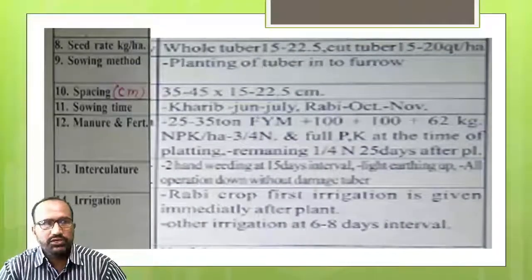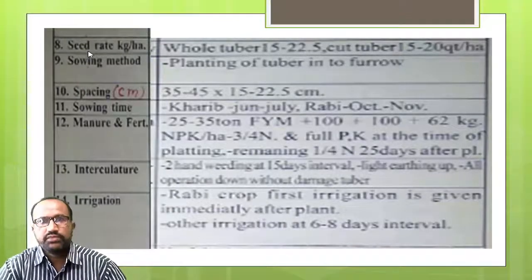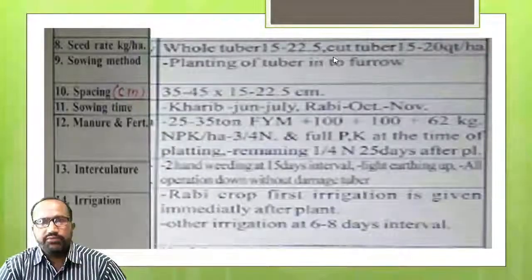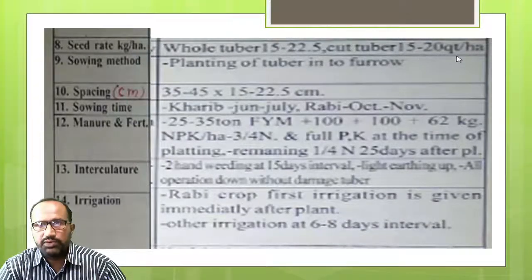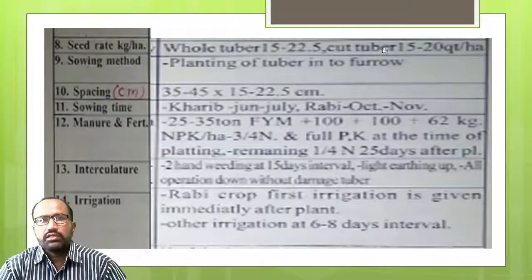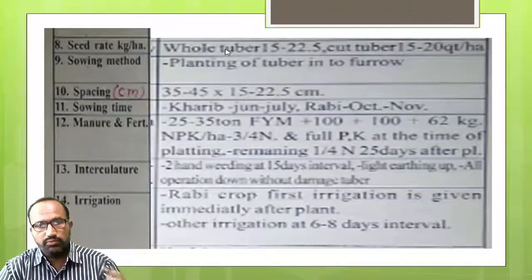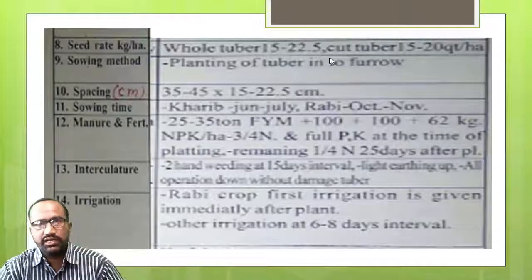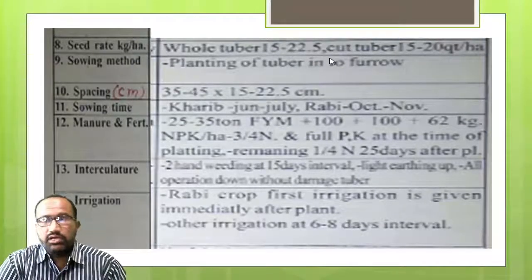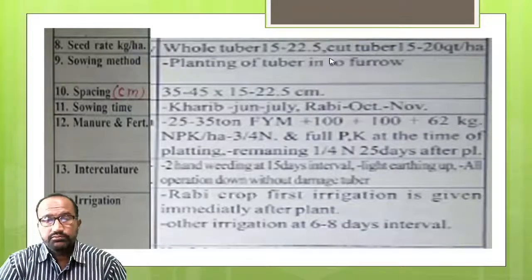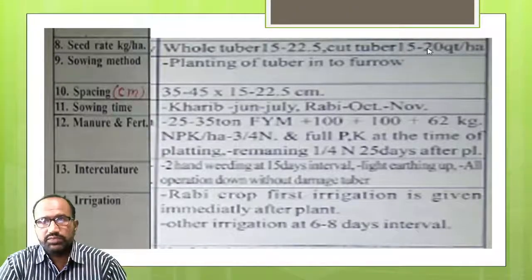Seed rate — tuber rate. Whole tuber: 15 to 22.5 quintal per hectare. Cut tuber: 15 to 20 quintal per hectare.